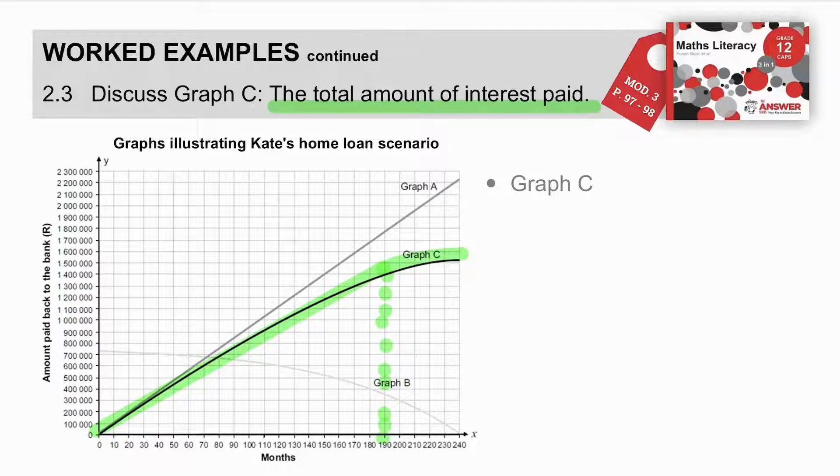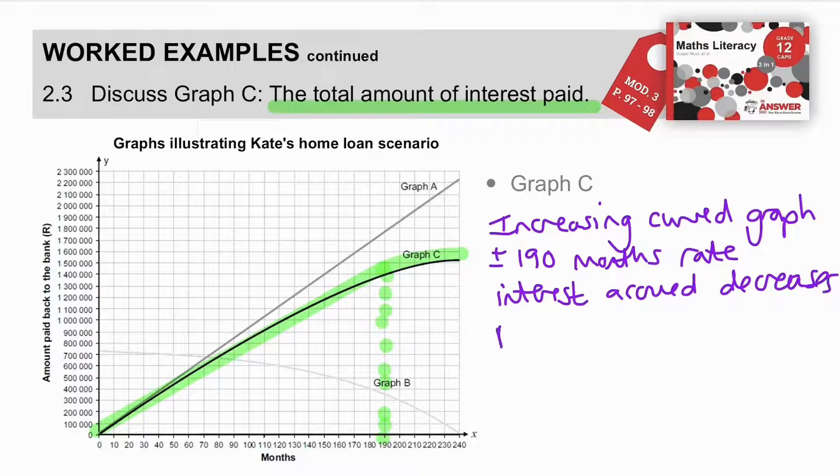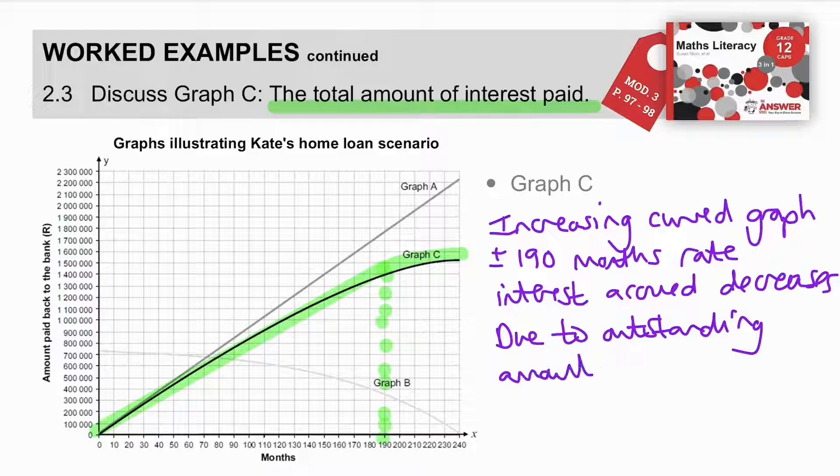Why is this? Again, in the beginning part of the home loan, your interest is high because the outstanding balance is high. But, towards the end, the total value owing is smaller. Therefore, the interest accrued is smaller. Let's summarize. Graph C is an increasing curved graph. We can say plus minus at 190 months, the rate of the interest accrued decreases due to the outstanding amount decreasing.